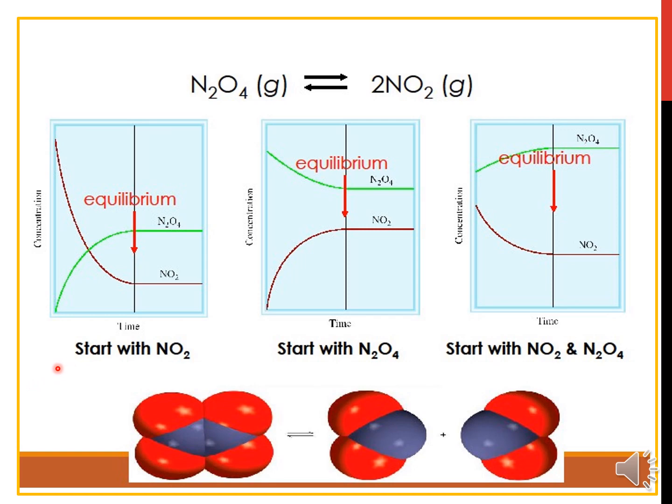We go for the first graph where we start with NO2 forming N2O4. When we start with NO2, NO2 is the reactant, thus the reactant concentration will decrease in time and the product will increase in concentration in time until it remains constant. The equilibrium here is at this vertical line where the first time when the concentration remains constant.